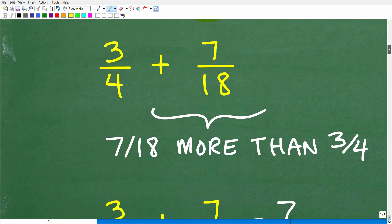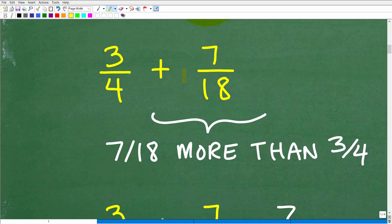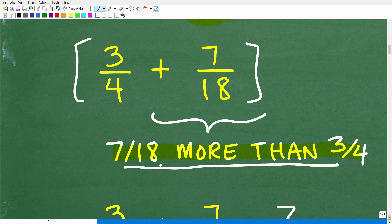That is 7/18 more than 3/4. So really what we're talking about is adding these two fractions together. Now, that might have seemed intuitively obvious to all of you, like, oh yeah, we're going to add these fractions. That's great. But you still need to really make sure you understand kind of the structure of these phrases. This is a simple problem, but these problems can get much more advanced.